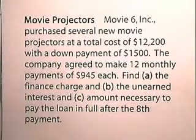Movie 6, Inc. purchased several new movie projectors at a total cost of $12,200 with a down payment of $1,500. The company agreed to make 12 monthly payments of $945 each. Find A, the finance charge.